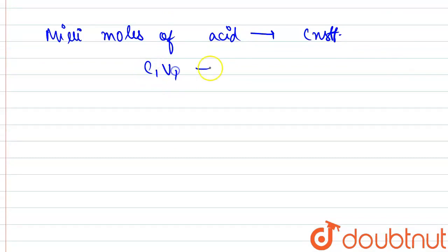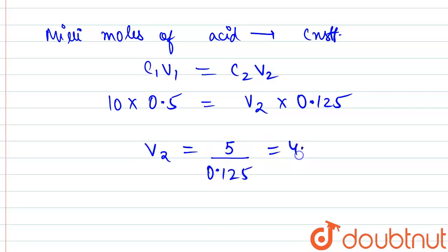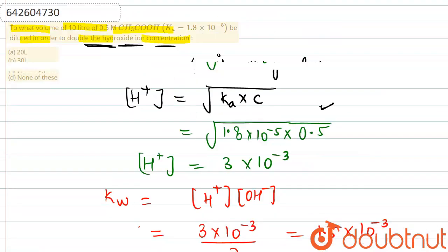We can use the expression c1v1 will be equal to c2v2. So concentration 0.5 multiplied by volume 10 will be equal to volume we have to find, and c2 we just calculated. From here, v2 will be equal to 5 divided by 0.125, that comes out to be 40 liters. So we can choose option C as the correct answer.